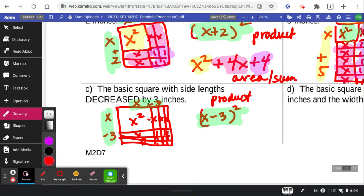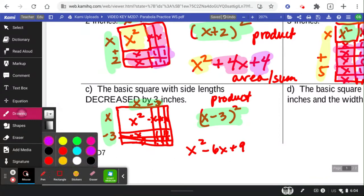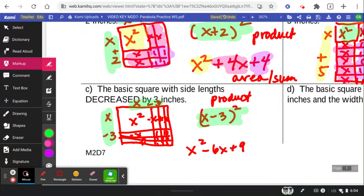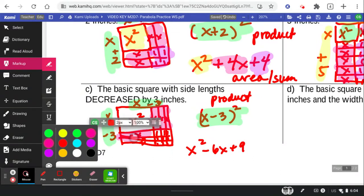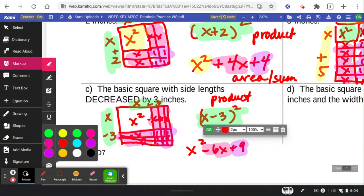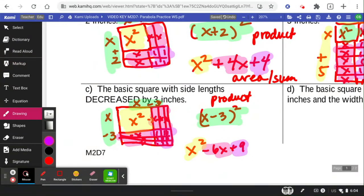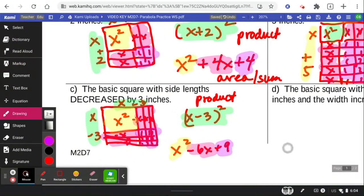So all these in here are negative x's this time. So we've got x squared minus 6x still plus 9. So when they say decreased, they mean to cut into the square.